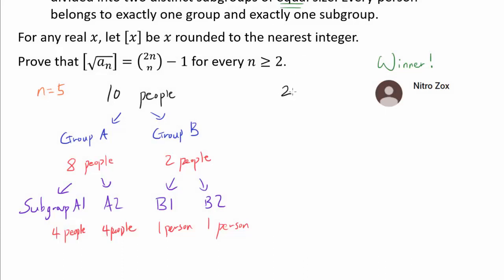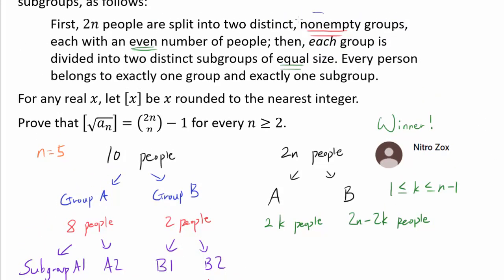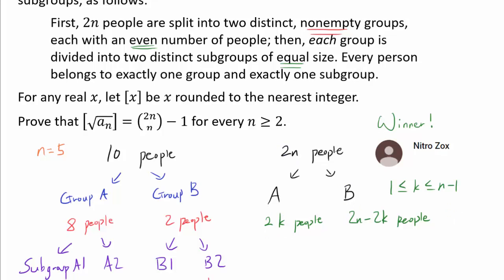Now let's follow the same process but with 2n people. We divide into group A and group B. Group A can have 2k people, since it must be even, and group B has the remaining 2n minus 2k people. We should realize that k is an integer between 1 and n-1 inclusive — k cannot be 0 because group A would be empty, and k cannot equal n because group B would be empty.